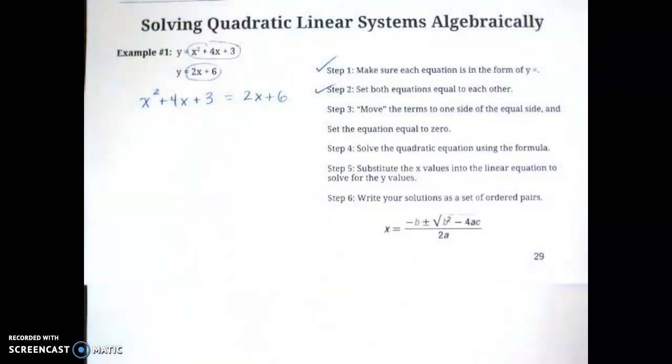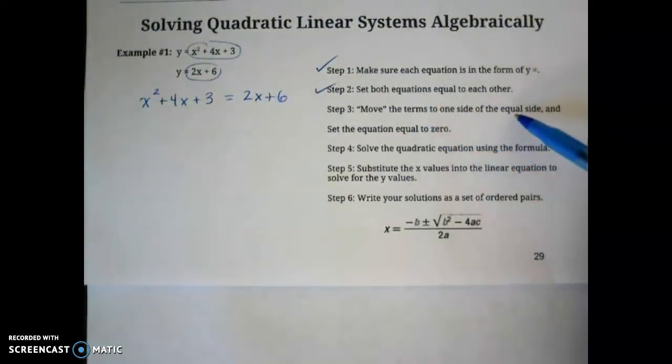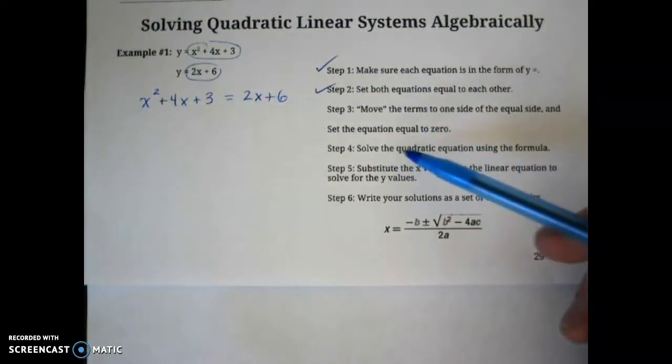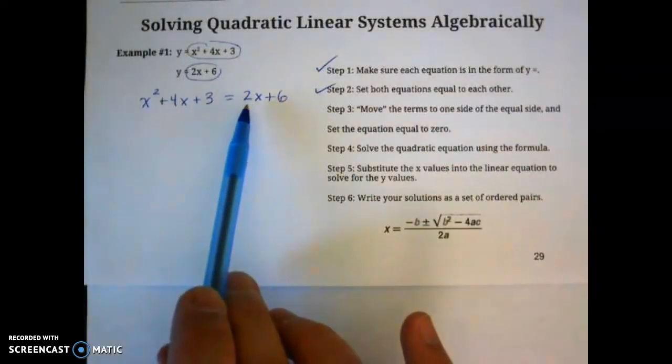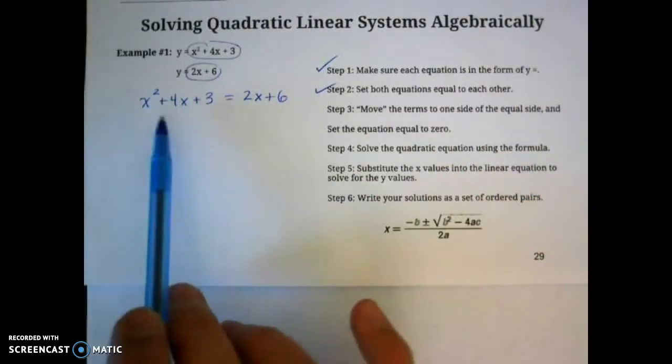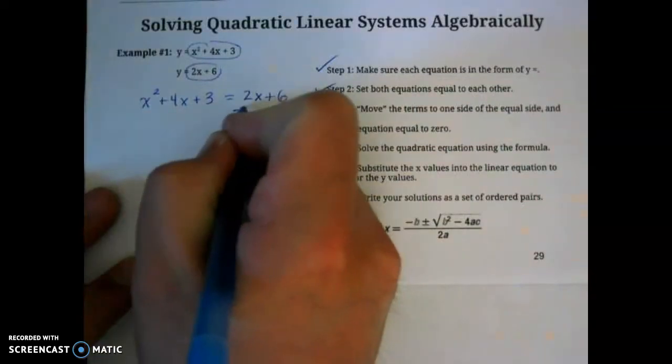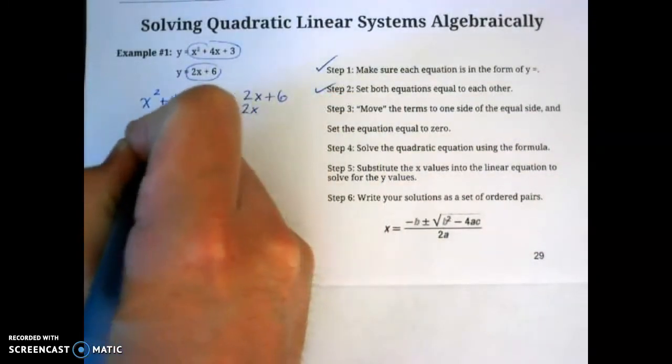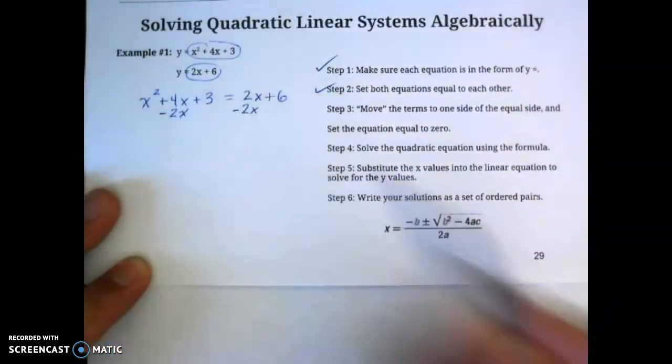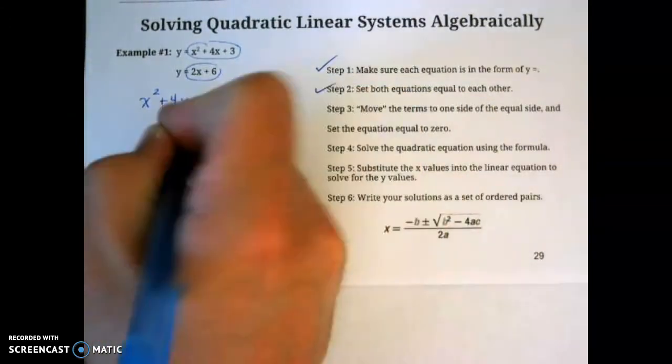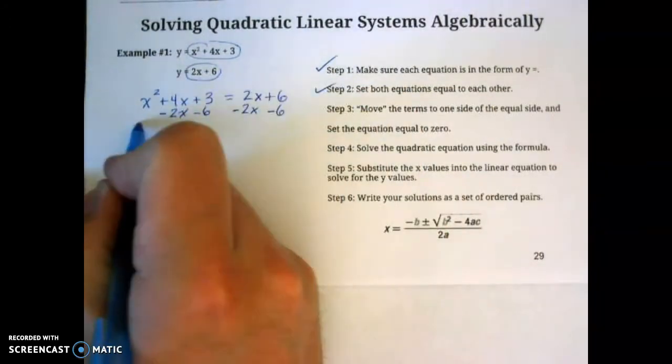Once you have them set equal to one another, you're going to move the terms to one side of the equal sign and set the equation equal to 0. So we need to move this 2x to the left side and the 6 to the left side. We'll use inverse operations, so we'll subtract 2x from both sides. Make sure you line up your like terms. We'll also subtract 6.